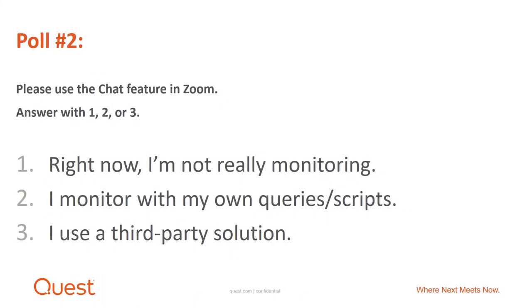The second polling question: answer with one, two, or three. One — you're not really monitoring your Postgres environment. Two — you're monitoring with your own queries, scripts, or homegrown application. Or three — you've invested in and are using a third-party solution. I'm seeing twos and threes. Really appreciate the responses. That's good information.